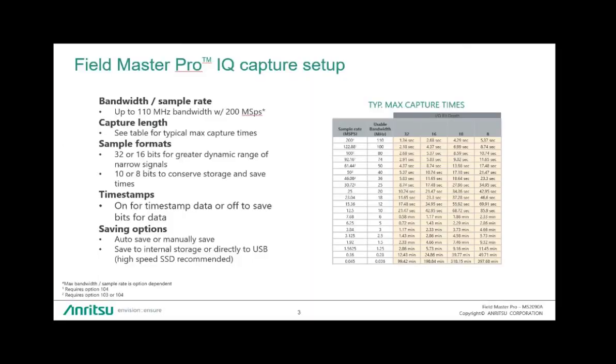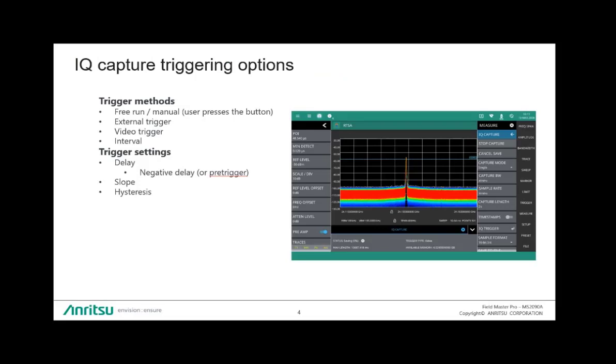So then, if we look at our triggering capabilities, this is where things get really fun. We offer a free run trigger, so this is essentially pushing a button. We also offer an external trigger, so if you have a stimulus where you want to synchronize your trigger to an external source, you can do it that way. We also offer a video trigger. So essentially, by setting a video line, we create this limit line, and any time RF energy crosses that line, we then begin to initiate the capture, and then either stop capturing or continue waiting for another trigger.